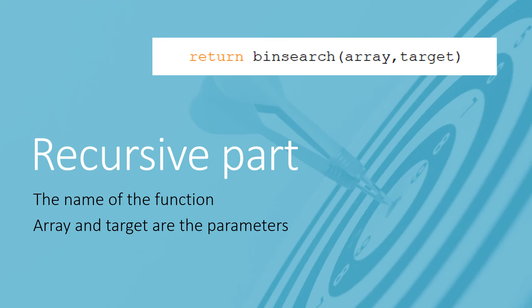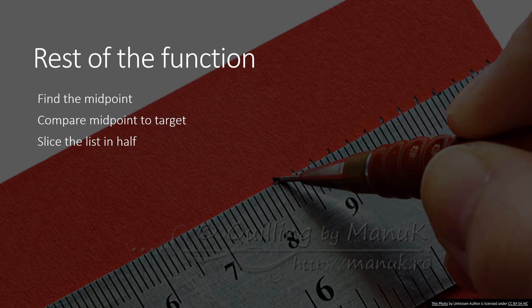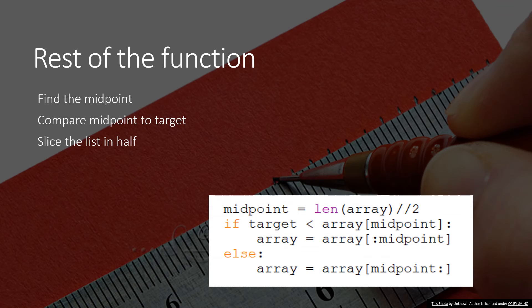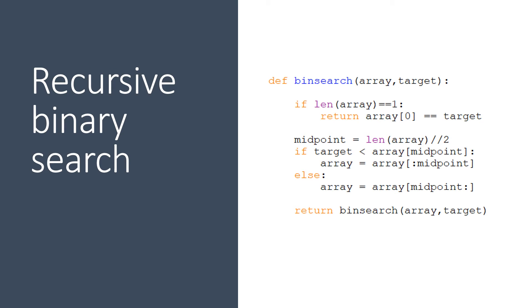Your recursive function is almost done. Now we have to put in all the other lines of code that we already wrote in the iterative function — the lines to find the midpoint, compare the midpoint to the target, slice the list in half, and take either the upper or lower half. This is really just copy and paste. Here's the complete recursive function with the base case, the recursive section, and all the other code — make sure you've written it and tested it with some lists of numbers.